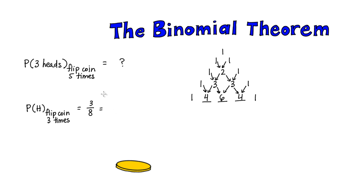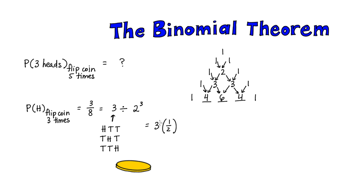If we dissect three eighths, this is three — the number of ways we can get one head — divided by the total number of outcomes, which was two to the third, since there were two possibilities, heads or tails, and we flipped the coin three times. That's the same as three times the probability of getting one head times the probability of getting two tails. And this number, three, is found in Pascal's triangle.